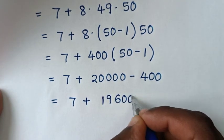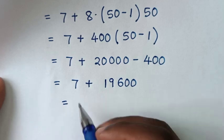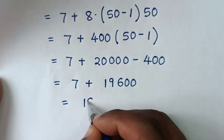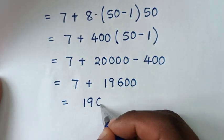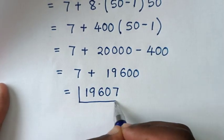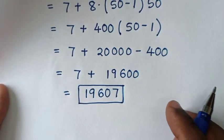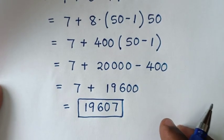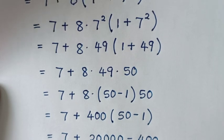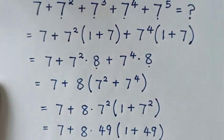Then it will be equal to 7 plus nineteen thousand six hundred, which is nineteen thousand six hundred and seven. Therefore this is our final answer. Thank you — don't forget, subscribe to my channel and see you in the next video, bye bye.